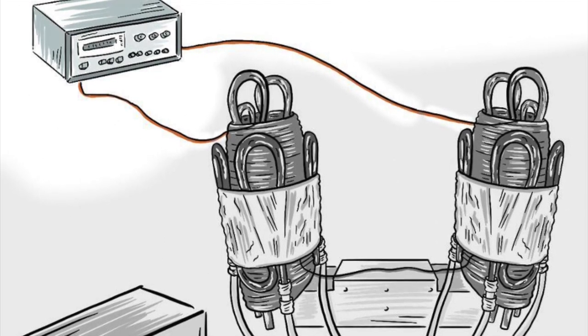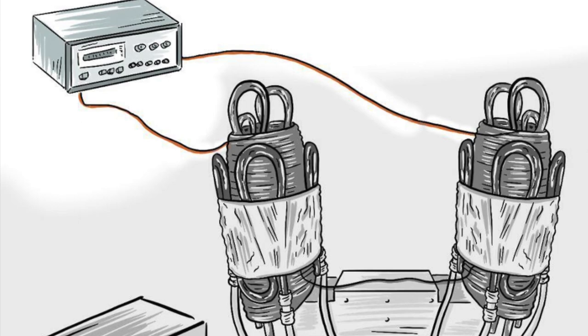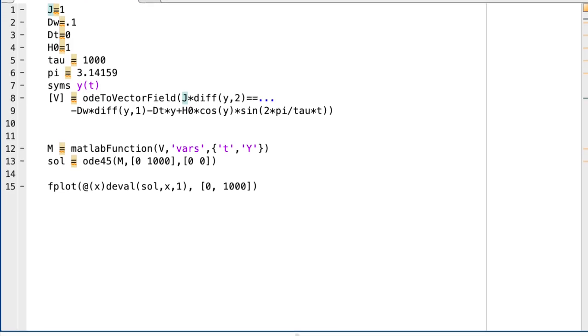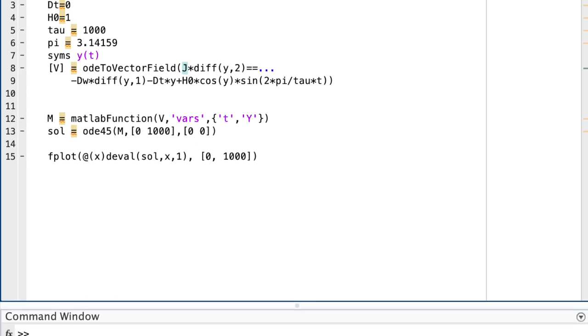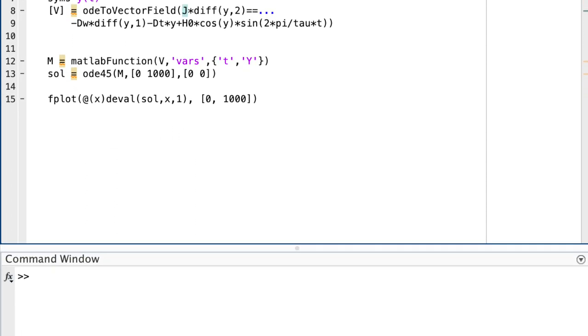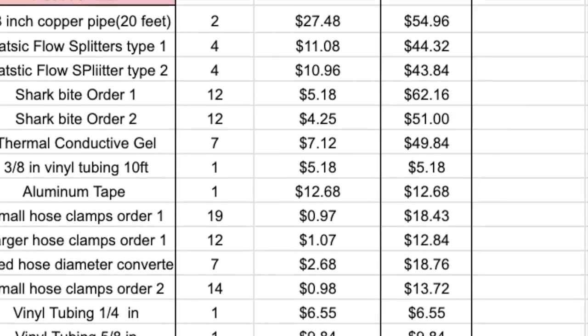We estimate that the system will generate 25.4 kW per second of heat based on the prototype's calculations. From the analytical model in MATLAB, the team was able to correctly simulate the interaction of two magnetic particles and the impact that they all have on each other based on the applied magnetic field.